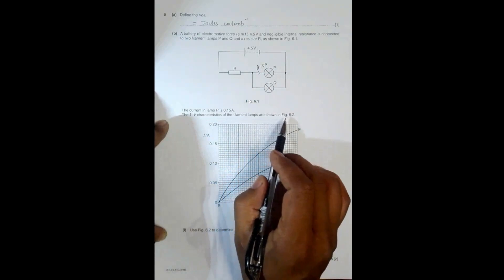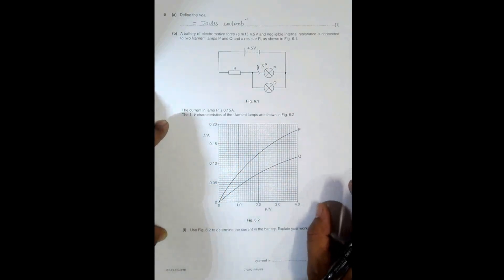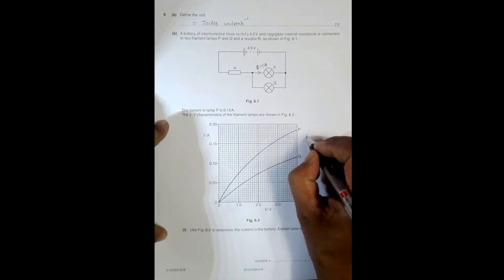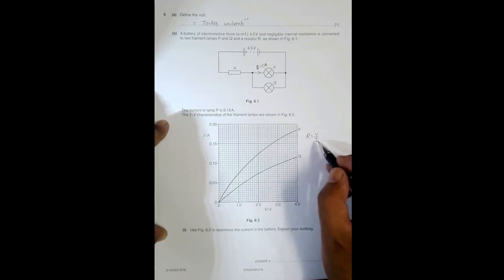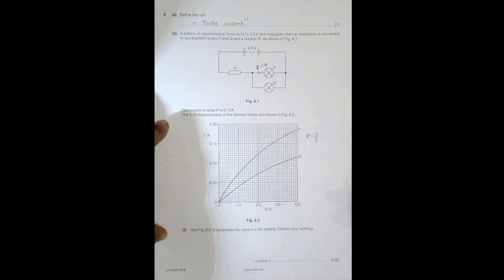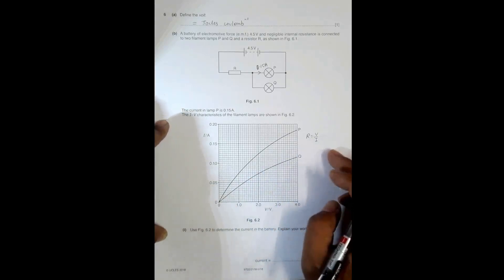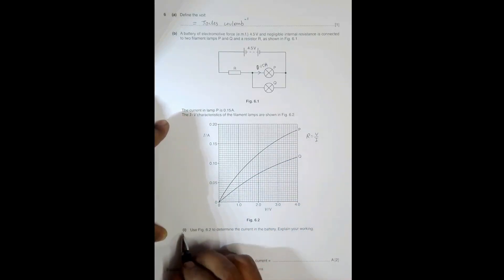The IV characteristics of the filament lamps are shown in figure 6.2. In a filament lamp, as the voltage increases, the graph slopes more towards the voltage axis. This means the ratio R = V/I goes on increasing — the resistance increases according to Ohm's law as the graph inclines more towards the potential difference axis.